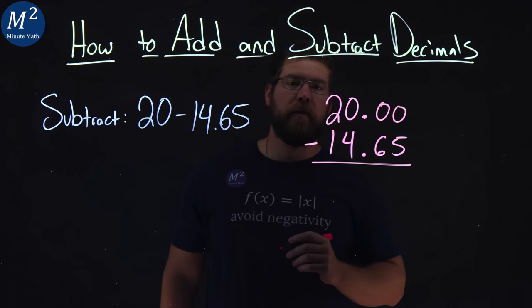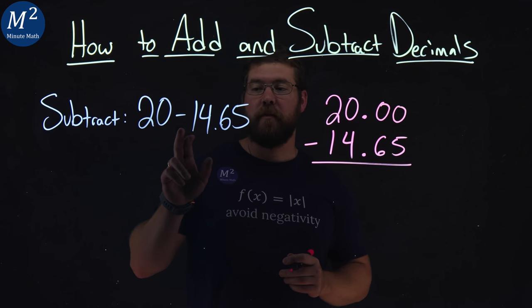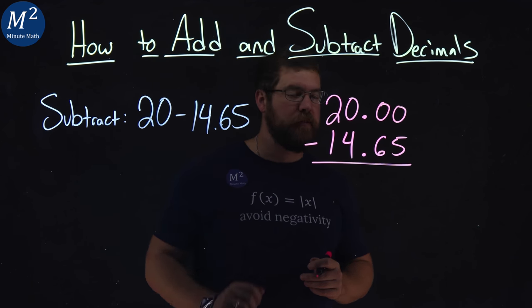Subtract these two numbers. It's important to make sure it's 20 over the 14.65. 20 subtracted by 14.65.